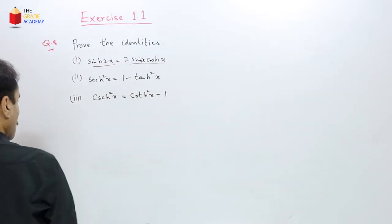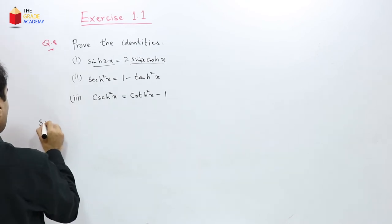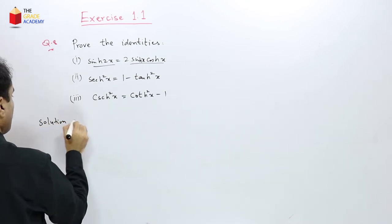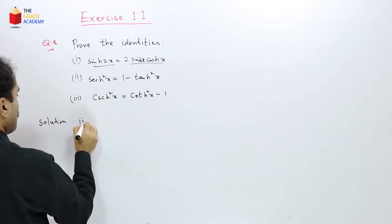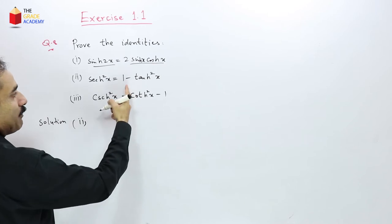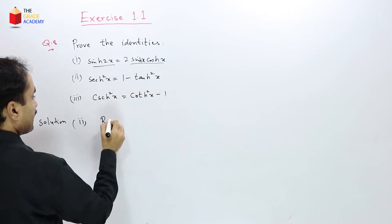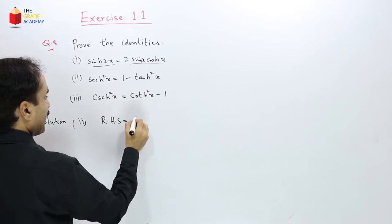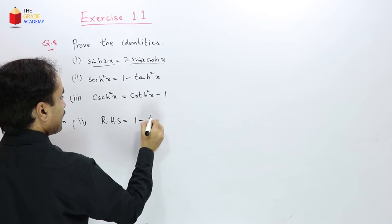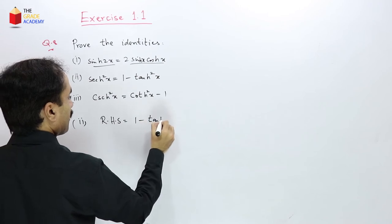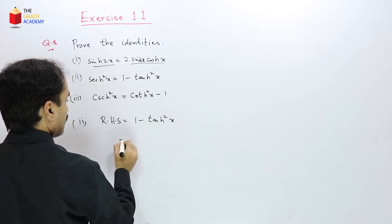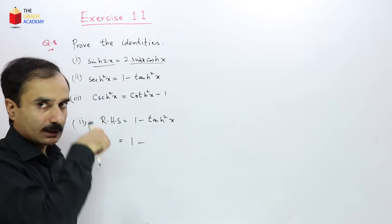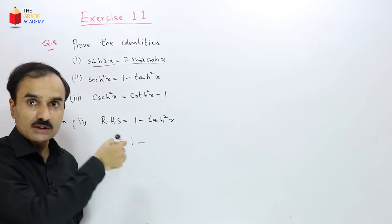For the second identity, we prove the right-hand side: 1 − tanh²(x). Since tanh(x) = sinh(x)/cosh(x), which in exponential form is (eˣ − e⁻ˣ)/(eˣ + e⁻ˣ), we compute 1 minus its square.